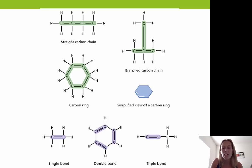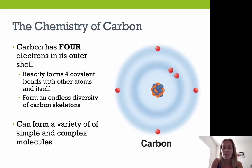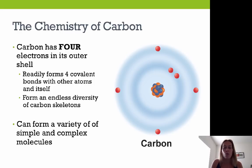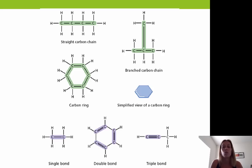Carbon is very unique in the variety of bonds it can form, not only with itself but with other atoms, including single, double, and triple bonds, because it has four valence electrons in its outermost energy level. This is why we're referred to as carbon-based life forms — all of our biological molecules have a backbone of carbon.